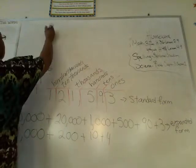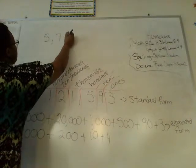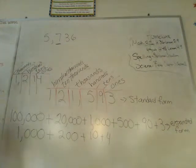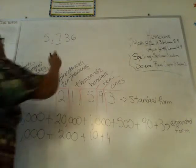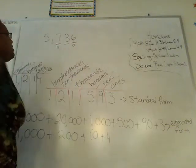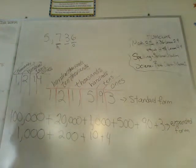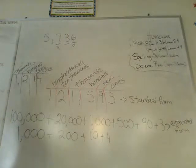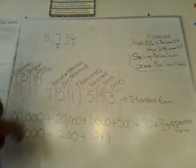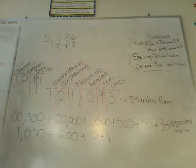Now if I wrote 5,736, what is the place value of the 7? Samir? Hundreds — good job. What about the 6, Atala? Ones — good job. And the 3, Timothy? Tens. And the 5 is where, Shaki? It is in the thousands — good job.